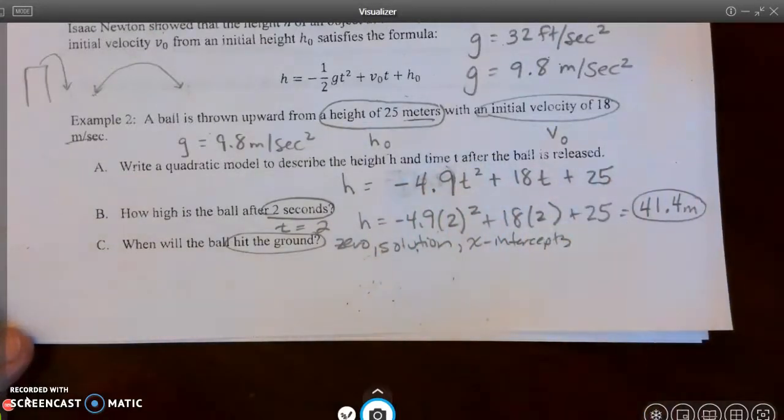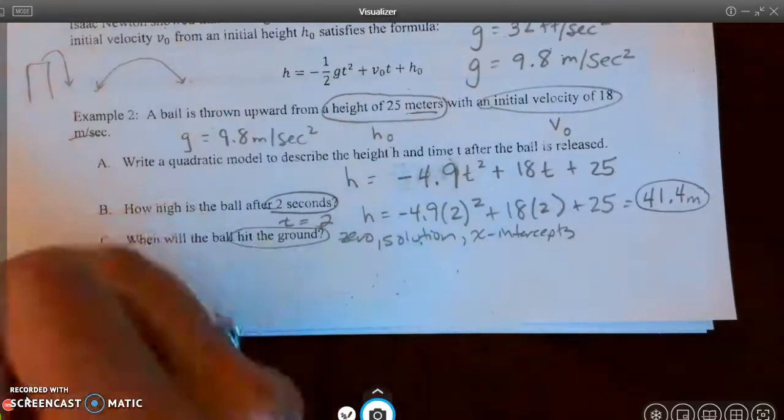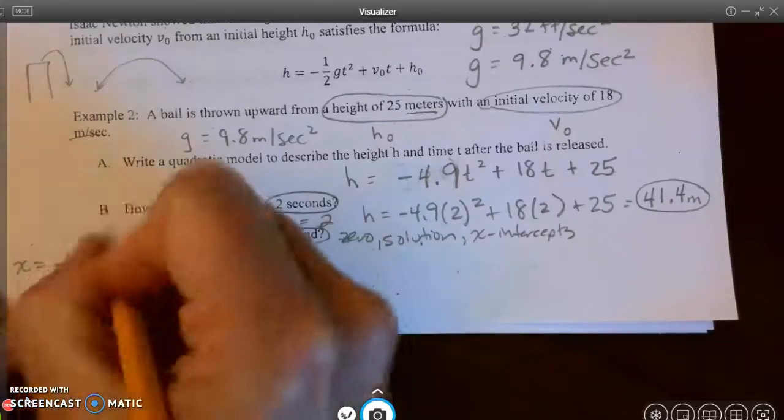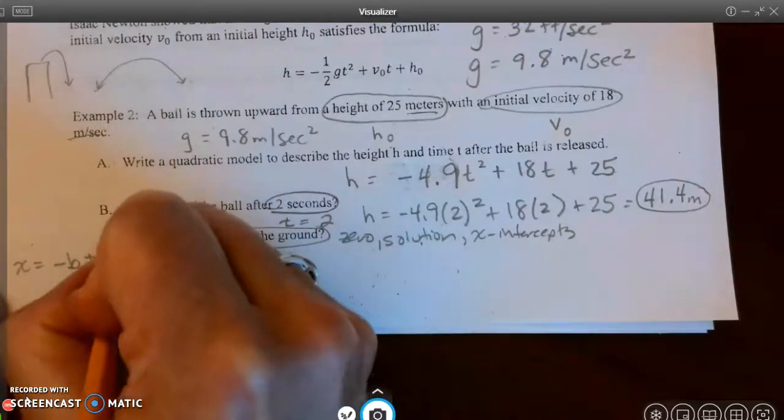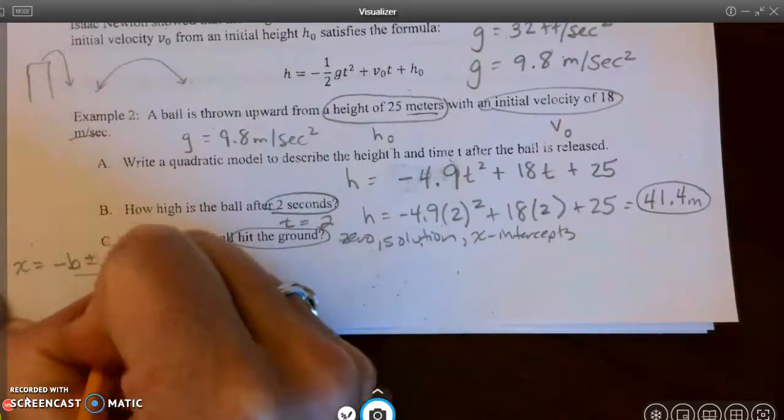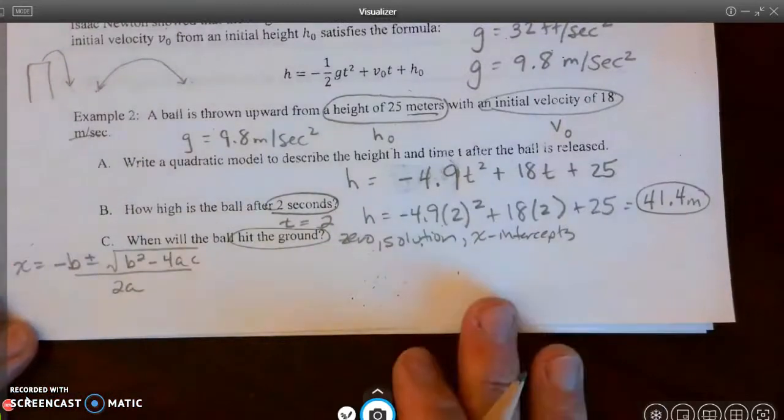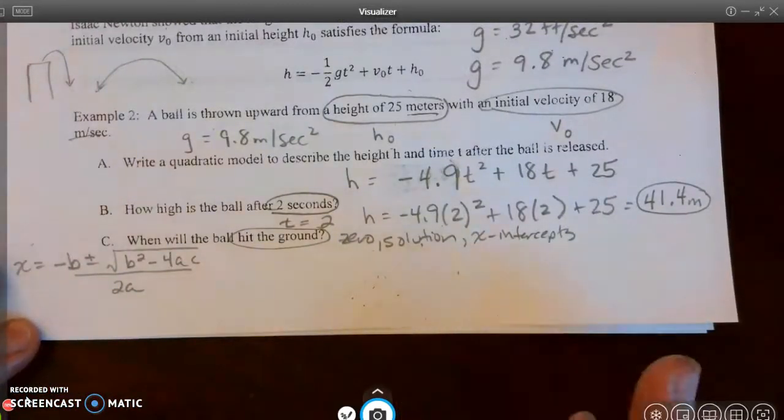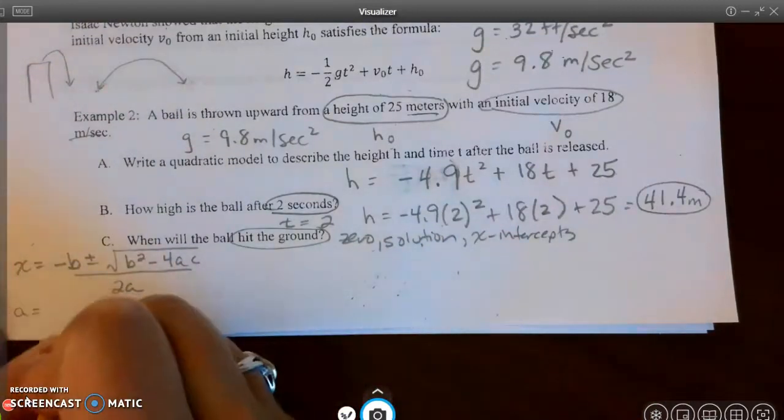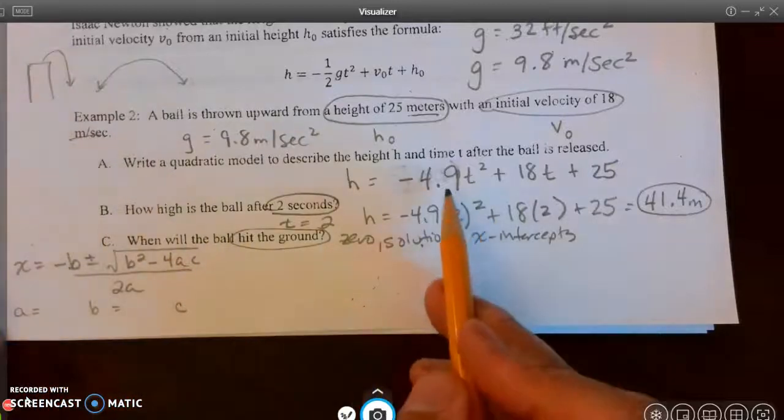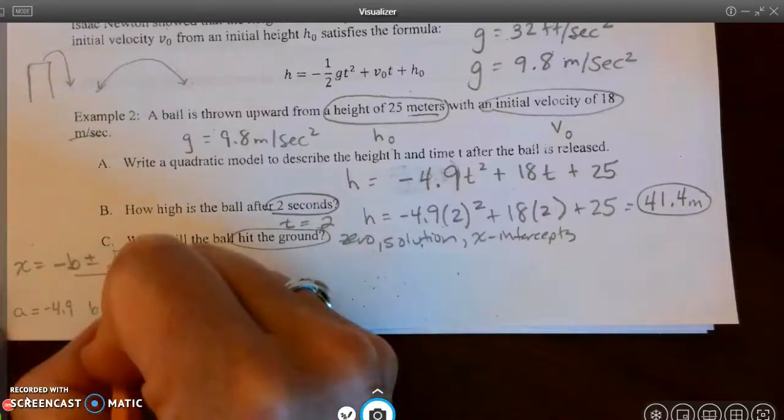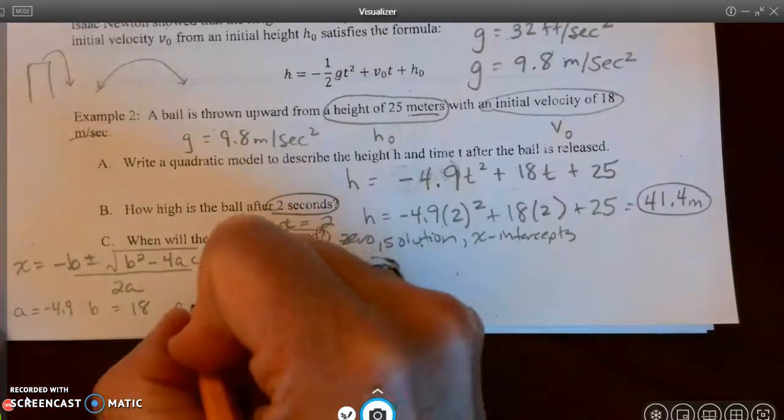So I thought we would just try the quadratic formula. So when you use the quadratic formula, the quadratic formula is x equals opposite of b plus or minus the square root of b squared minus 4ac all over 2a. That is my quadratic formula. All right, so the first thing I do when I'm using the quadratic formula is I identify my a, b, and c values. In this equation, a is negative 4.9, b is 18, and c is 25.